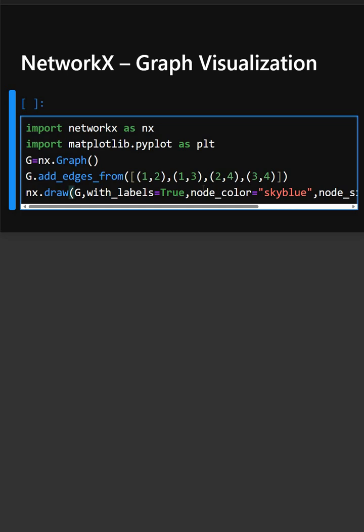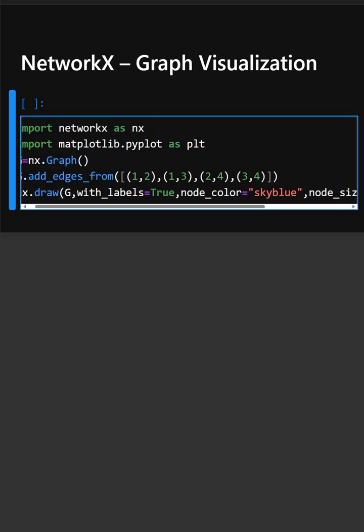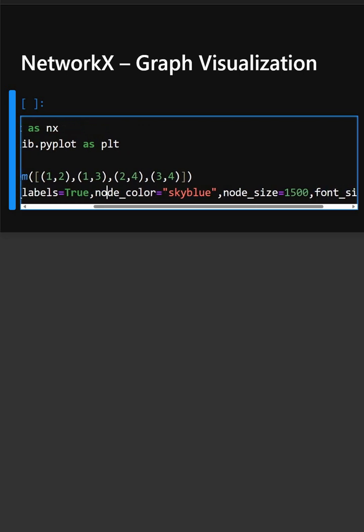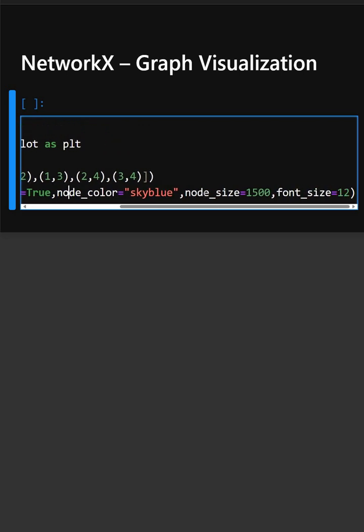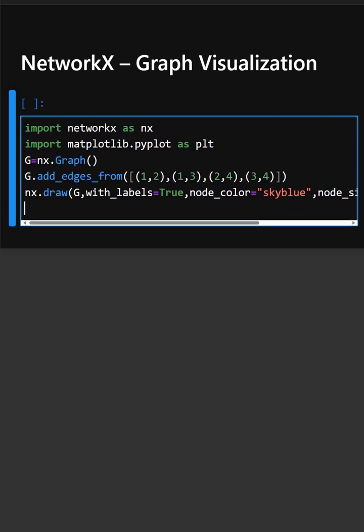Here in this line, nx.draw plots it beautifully with label set to true, node color is sky blue, node size is 1500, and font size is 12. Finally, plt.show displays the plot.